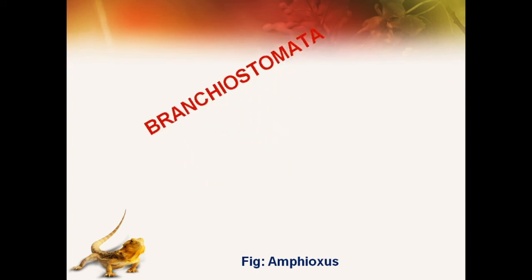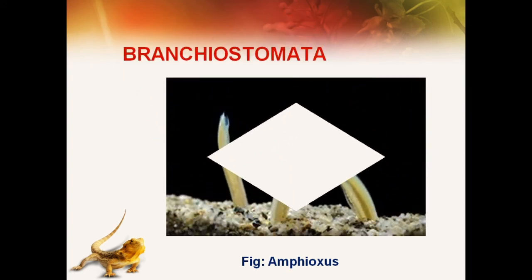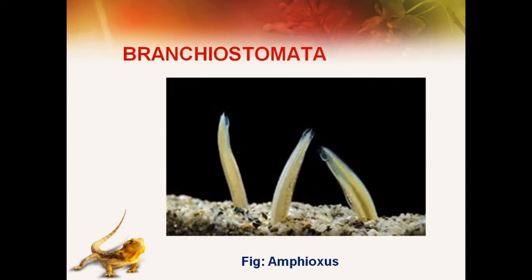In Branchiostomata, for example in Amphioxus, the skin is thin, moist and wet, supplied with rich blood circulation and is vascular. Exchange of gases takes place through the skin. Other respiratory organs are lacking, but its pharyngeal wall is lined by mucous membrane which is highly vascular and always kept in contact with water current, through which easy exchange of gases takes place.